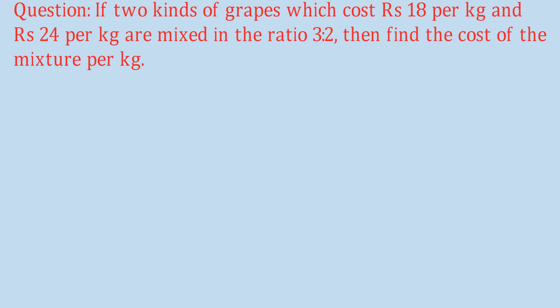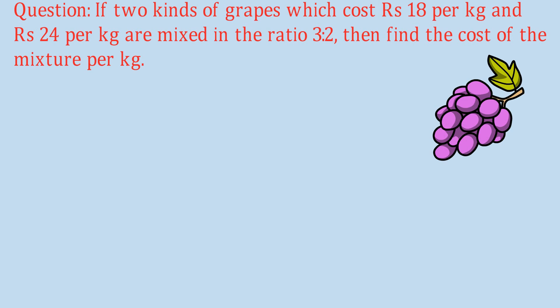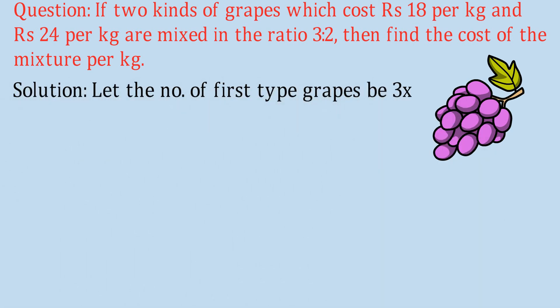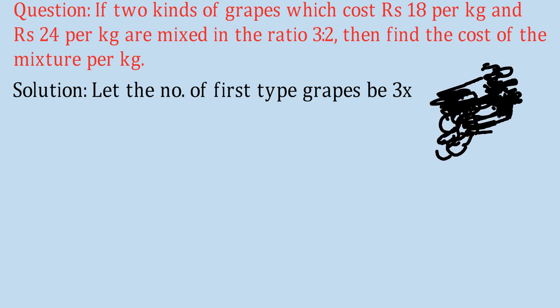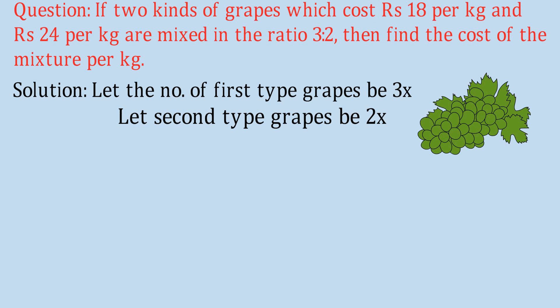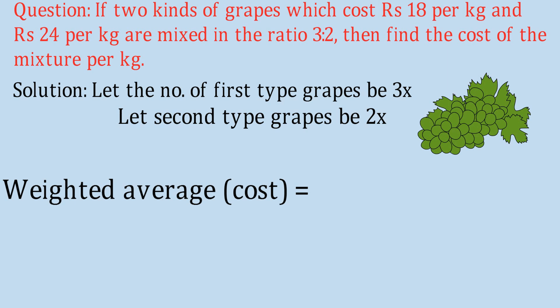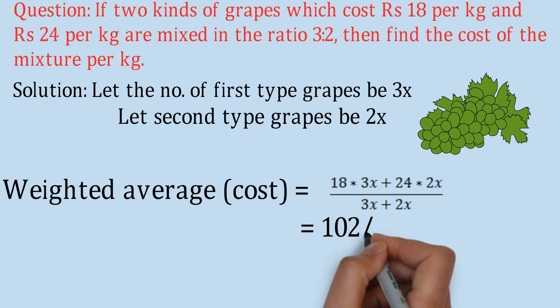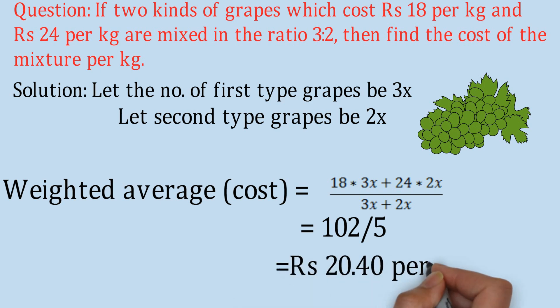Next question: two kinds of grapes costing rupees 18 per kg and rupees 24 per kg are mixed in the ratio 3 to 2. Find the cost of the mixture per kg. Let the first type be 3x kg and the second type be 2x kg. Applying the weighted average formula over cost: (18 × 3x + 24 × 2x) ÷ (3x + 2x) = 102x ÷ 5x = 20.40 rupees per kg. That is the weighted average cost of the mixture.